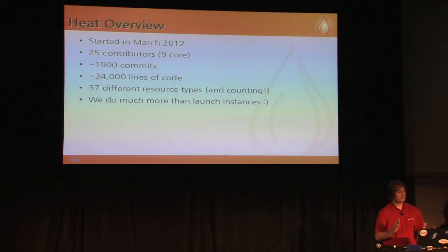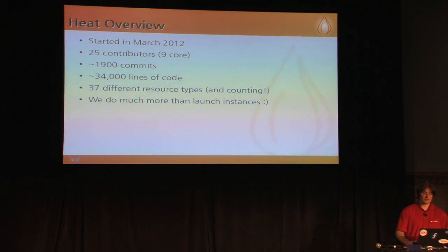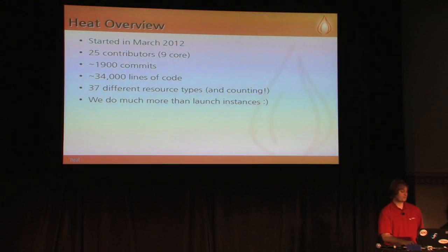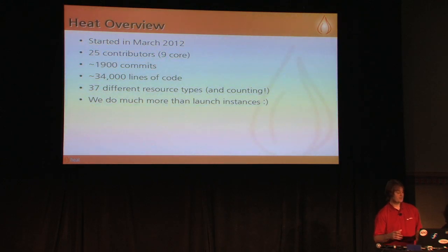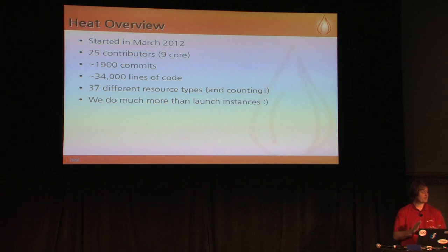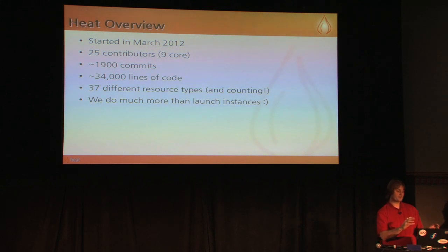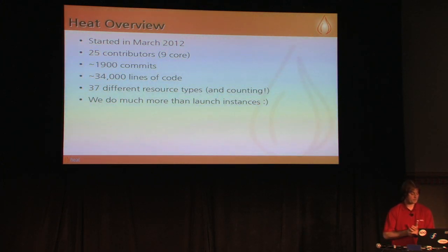Here's just a brief overview of the history of HEAT. We only started a year ago and I think we've managed to achieve really quite a lot in that year. We've gone from nothing to having software which actually works and is useful to people, and to reach the point where it can be considered for inclusion as part of the coordinated release of OpenStack is something we can be justifiably proud of. We've got 25 people who contributed to HEAT, nine core members, about five or six contributing regularly. There are about 1,900 commits and roughly 34,000 lines of code including tests.